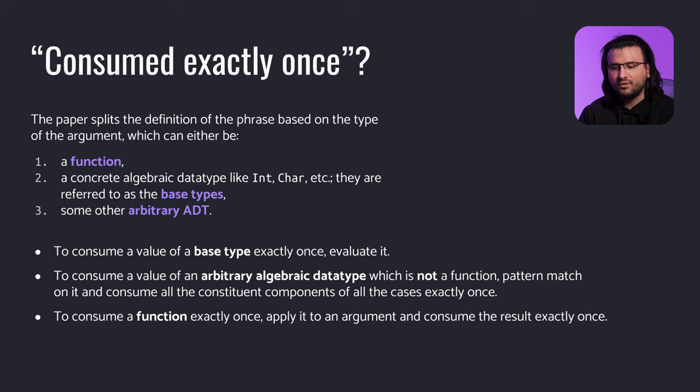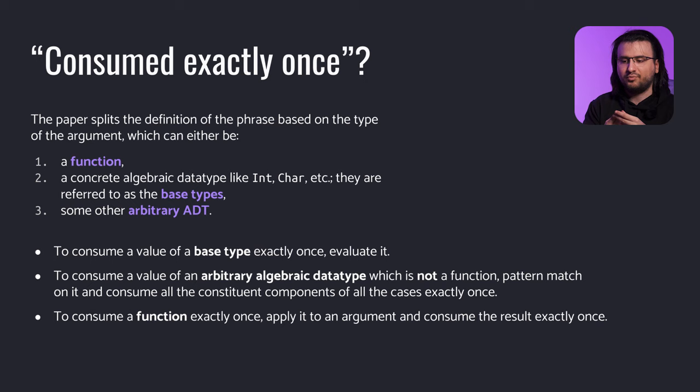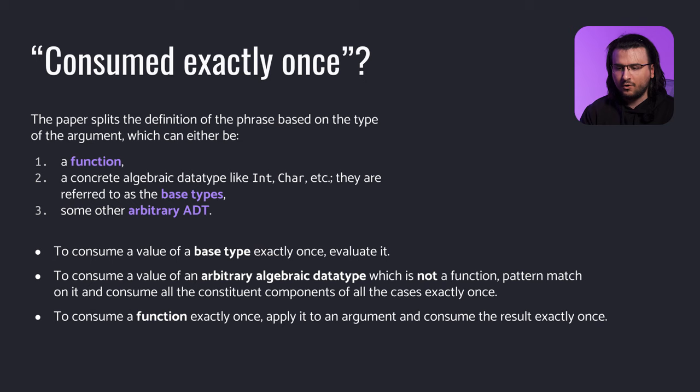What does 'consumed exactly once' mean here? The paper introduces a rigorous definition depending on the structure of the argument and considers three cases: when the argument is a function, when the argument is an arbitrary algebraic data type, and when the argument is a concrete algebraic data type like int or char — referred to as the base types. To consume a value of a base type exactly once, simply evaluate it.